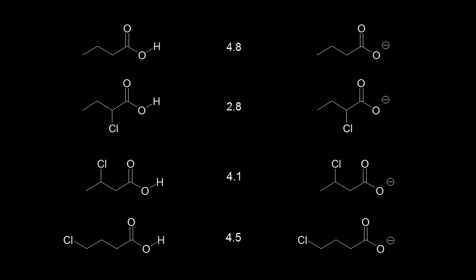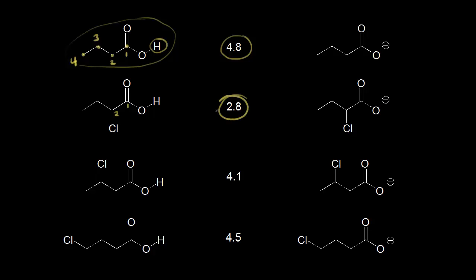The inductive effect falls off over distance. Looking at butanoic acid — carbon one, carbon two, carbon three, carbon four — this proton has a pKa of approximately 4.8. Comparing to 2-chlorobutanoic acid, with a chlorine on carbon two, the pKa drops to 2.8. This is again due to the inductive effect: an electronegative atom withdrawing electron density, stabilizing the conjugate base, and lowering the pKa.